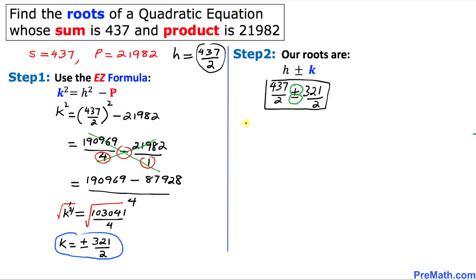So first number is going to be 437 divided by 2 plus 321 divided by 2. The common denominator is going to be 2 so we can write 437 plus 321. If we add these numbers that is going to give us 758 divided by 2. That means our first number is going to be 379.